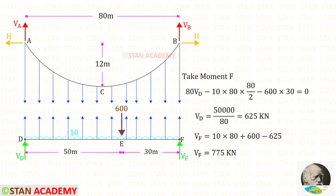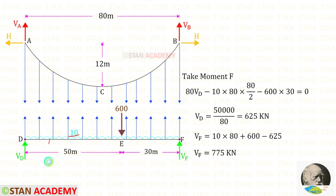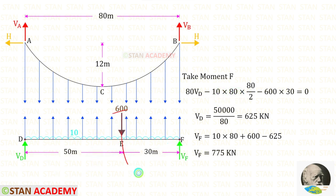Let us find the vertical reaction VED. For that, let us take a moment about F. VED is acting in the clockwise direction, so it will be positive and the distance is 80, so 80·VED. This load is acting in the anticlockwise direction so it will be negative, and the point load is also acting in the anticlockwise direction with distance 30. Finally, for VED we will get 625 kN.